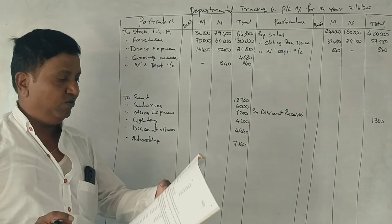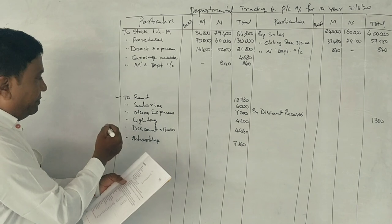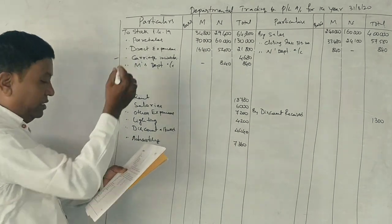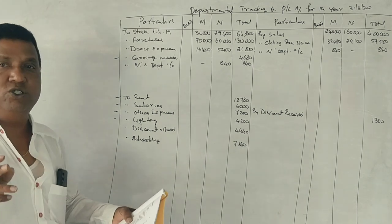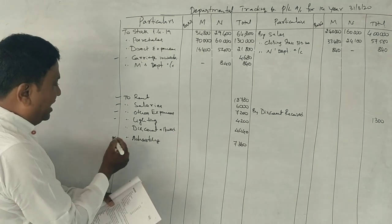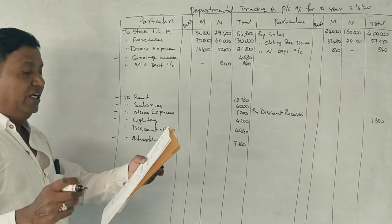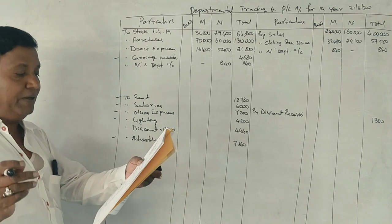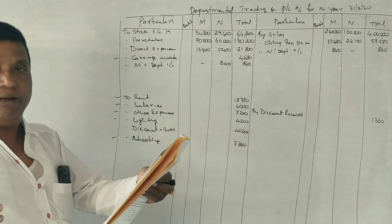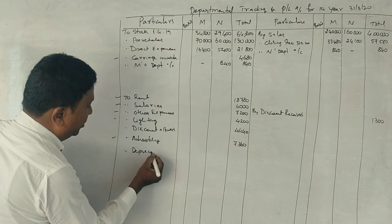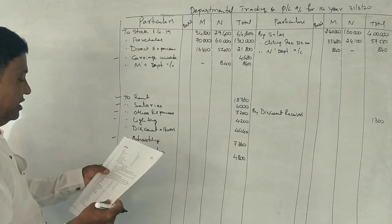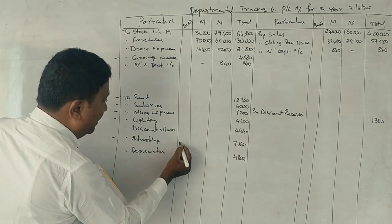Next, rent and other expenses: salaries, lighting, carriage inwards — to be divided in the ratio of 2:1. Advertisement and publicity to be divided equally, 1:1. Discount allowed to be divided on the basis of sales ratio. Total depreciation is 4,800 rupees, divided in the ratio of 3:2 between M and N departments.